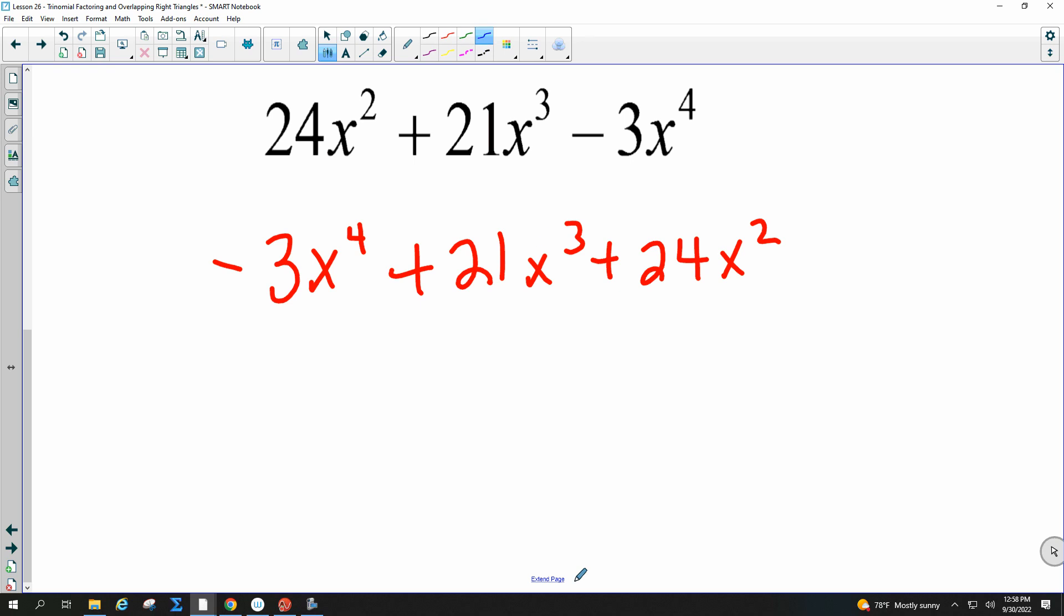So yes, you first need to find a GCF. You should technically always look for that first. The other ones didn't have a GCF. But I would look for that always first. So what number can come out of all those? Everybody? 3. And how many x's are common? 2. And there's a negative in the front, which you want to pull out. Anytime there's a negative in the front, you want to factor it out first. So I'm going to take out a negative 3x squared and see what I have left.